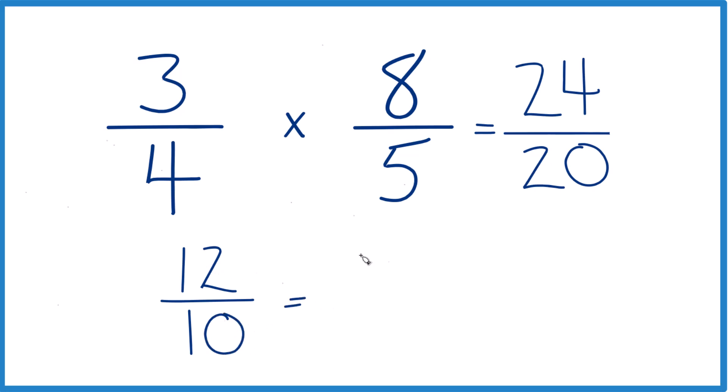We can do it again. 12 divided by 2, that's 6, 10 divided by 2, that's 5. So we can say 3 fourths times 8 fifths, or 3 fourths divided by 5 eighths, that gives us 6 fifths.